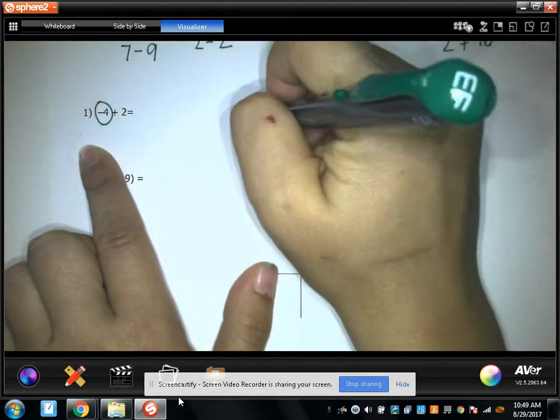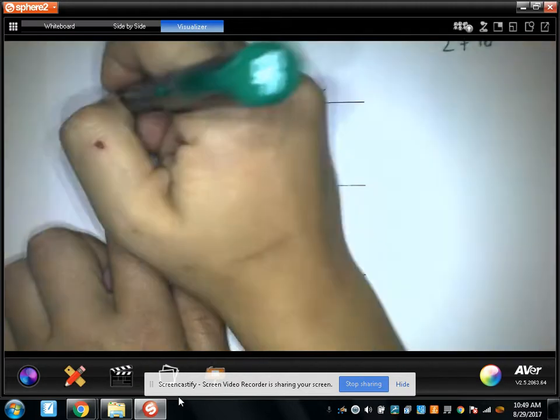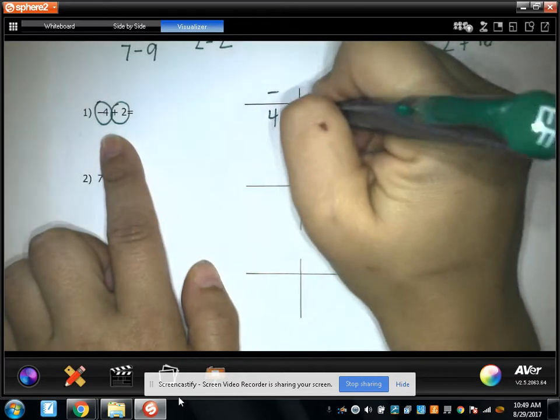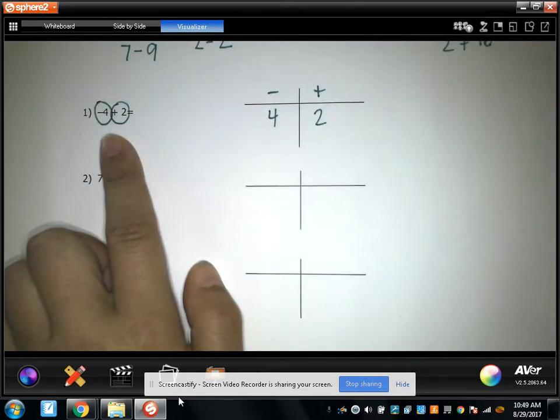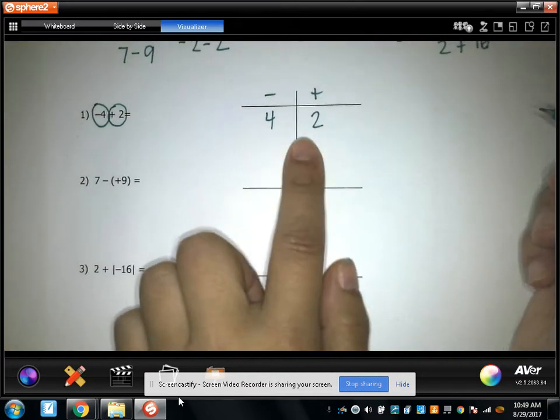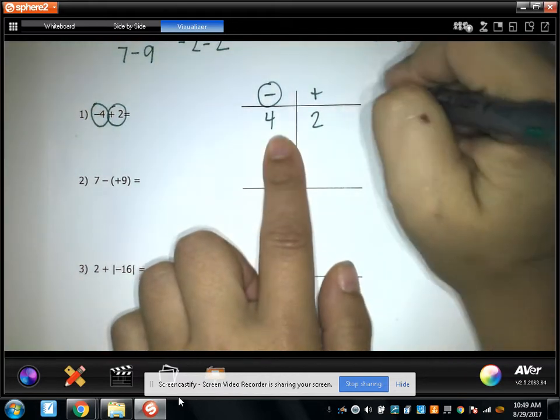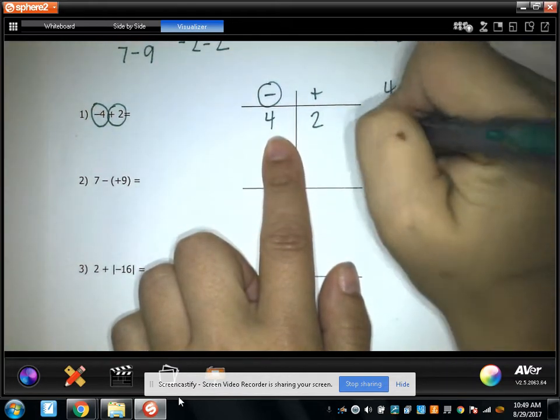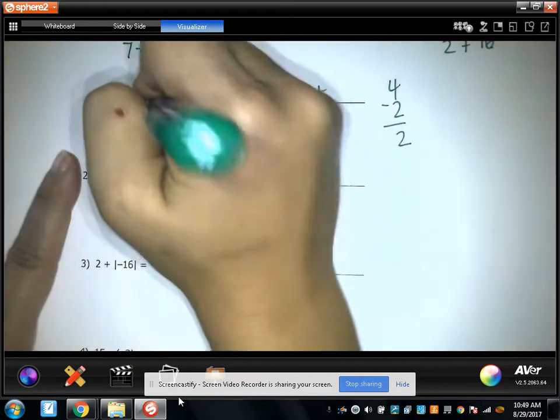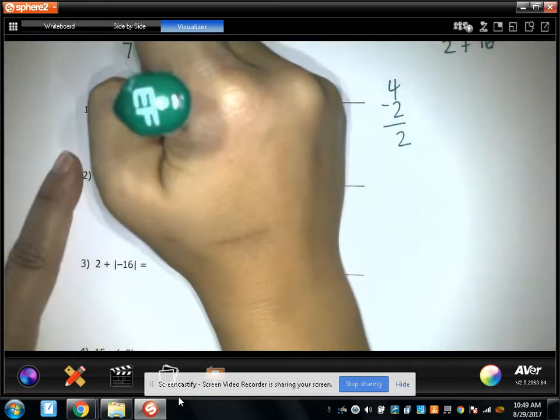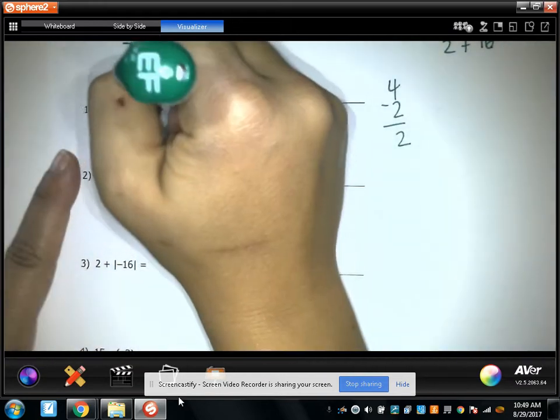Team negatives got these four points. So let's give team negatives four points. And team positives got these two points. So let's give them these two points. Which team won? Negatives. Well, by how much? By two. Team negatives won by two. Circle your answer.